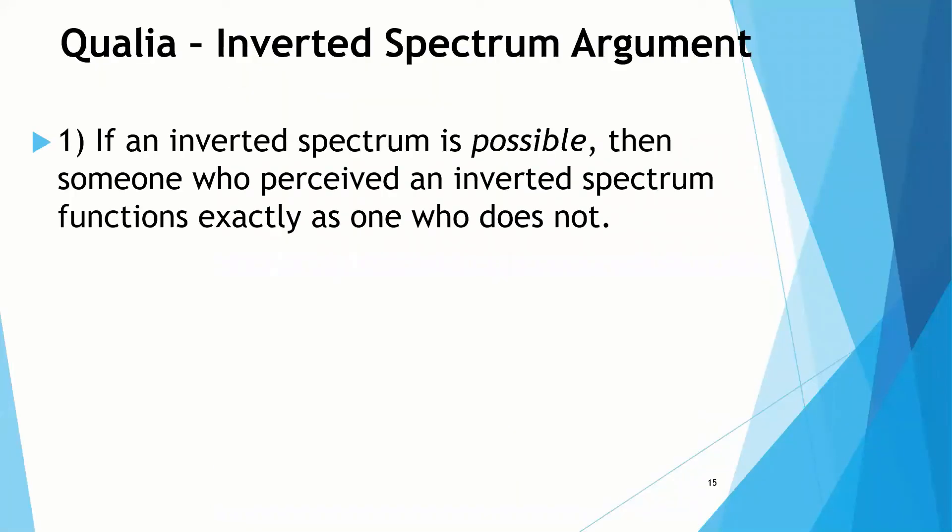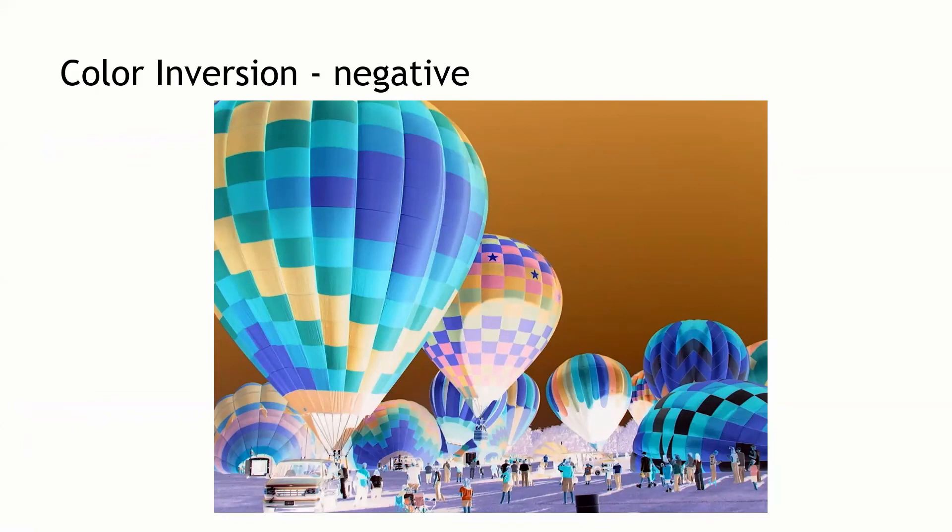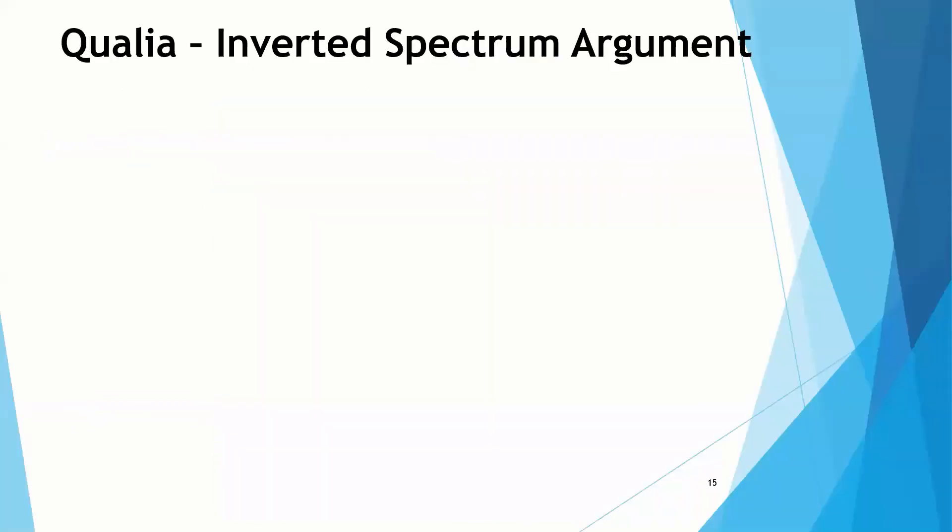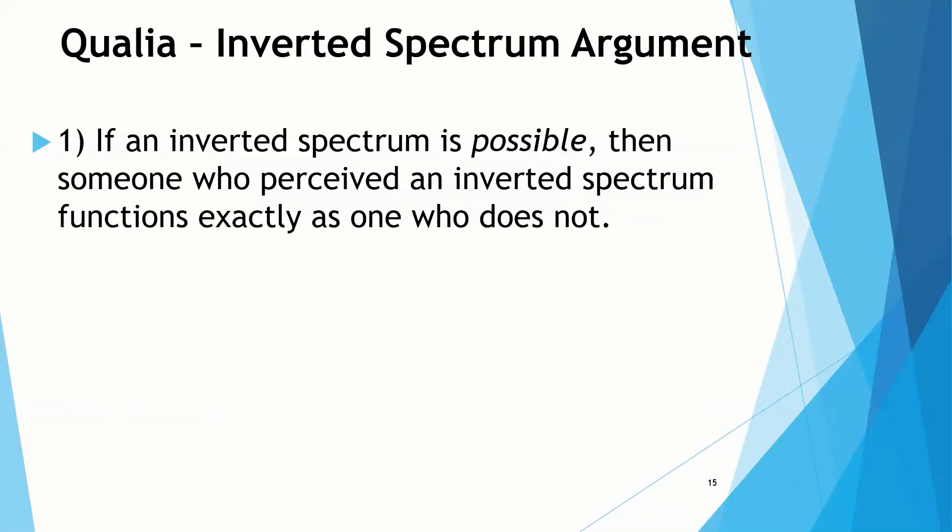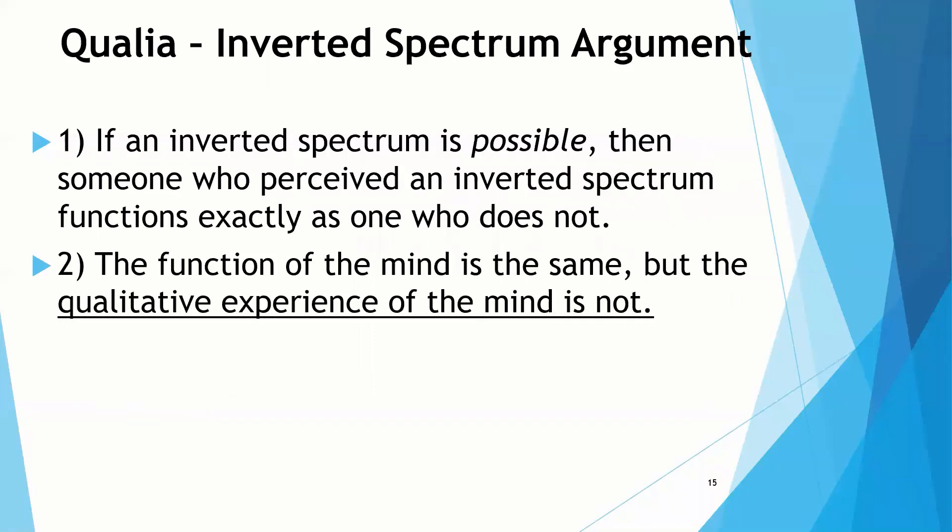Here's the argument with the inverted spectrum. If an inverted spectrum, the way we just described it, is possible at all, it doesn't have to be the case, it just has to be possible, then someone who perceived an inverted spectrum would function exactly the same as someone who does not. It could be you that's experiencing the inverted function. That is, it's possible that the rest of the world sees everything like this, and you're the odd one who sees it like this. This kind of inverted perception of the spectrum of colors is possible.